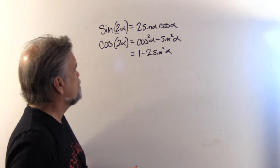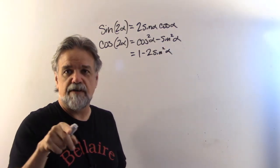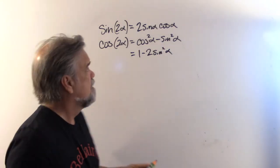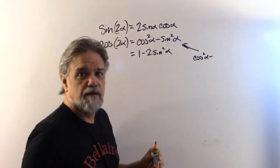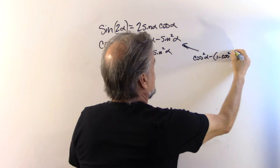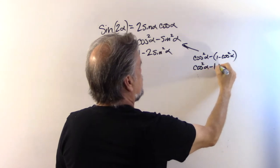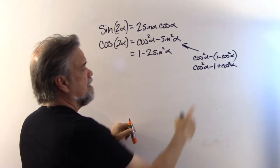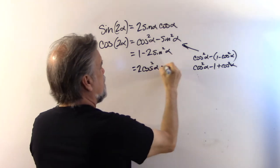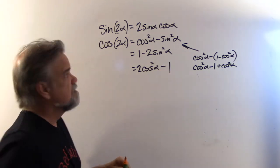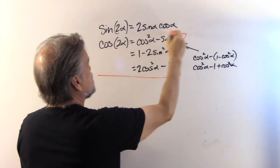We have two different identities for cosine of 2α. But wait — sine squared equals 1 minus cosine squared, since sine squared plus cosine squared is 1. Substituting that in: cosine squared α minus (1 minus cosine squared α) equals 2 cosine squared α minus 1. So we end up with not 1, not 2, but 3 different identities for the cosine of 2α.